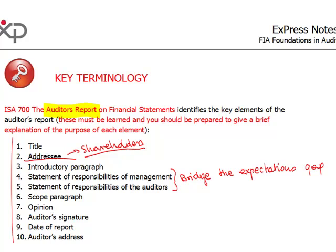Then the scope paragraph, which says what the auditor did — that the auditor did it on a test basis and that the auditor provides reasonable assurance. And then probably the most interesting part of the auditor's report: the opinion paragraph, where the auditor says whether the financial statements do provide a true and fair view or not.